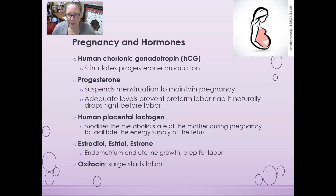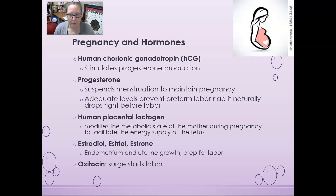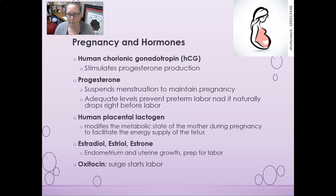The first pregnancy hormone is HCG, human chorionic gonadotropin. Its job is to stimulate progesterone production, and progesterone is needed to maintain pregnancy. HCG is also the hormone detected in pregnancy tests, which will be the subject of the next video. Progesterone helps maintain the pregnancy and suspends menstruation, preventing shedding of the uterine lining where the fetus is implanted.